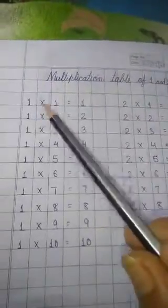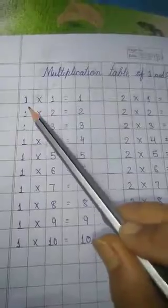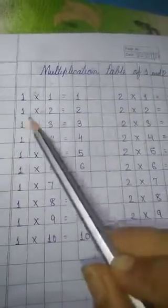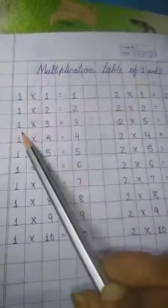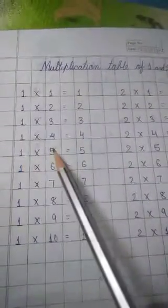Now, let's start with the multiplication table of 1. 1×1 is 1. 1×2 is 2. 1×3 is 3. 1×4 is 4. 1×5 is 5.